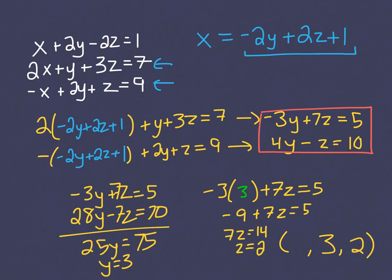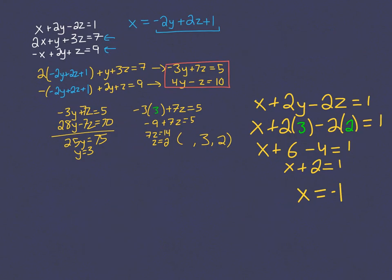Now that I have found y and z, I have to go back to one of my original three equations. All three of these are going to work, and I need to solve for x. I copied down the first equation, x plus 2y minus 2z equals 1, and I filled in my y and my z values. Then I solved, and I got the x equals negative 1.